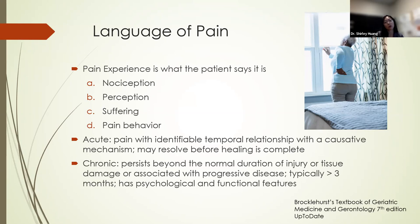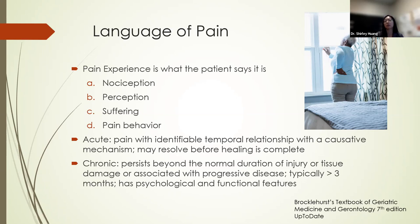Acute pain occurs with an identifiable temporal relationship with a causative mechanism — for example, stepping on a nail. It may start to resolve even before the wound is completely healed. Chronic pain persists beyond the normal duration of injury or tissue damage, or is associated with a progressive underlying disease process. It typically lasts more than three months and has more psychological and functional features in the pain experience.